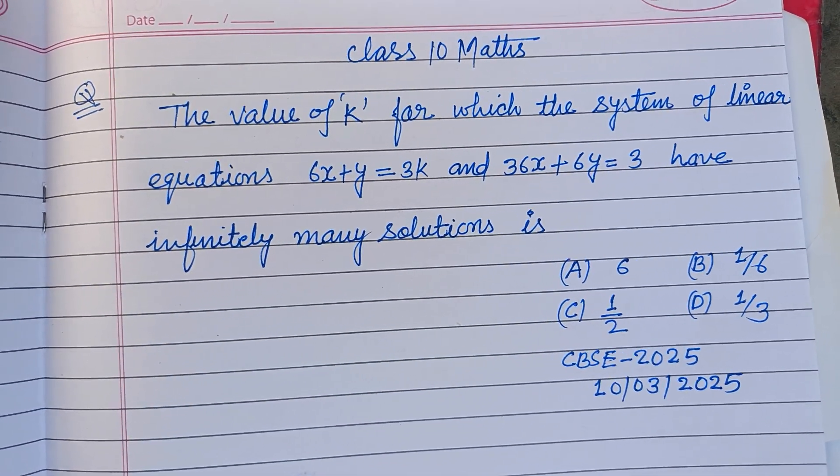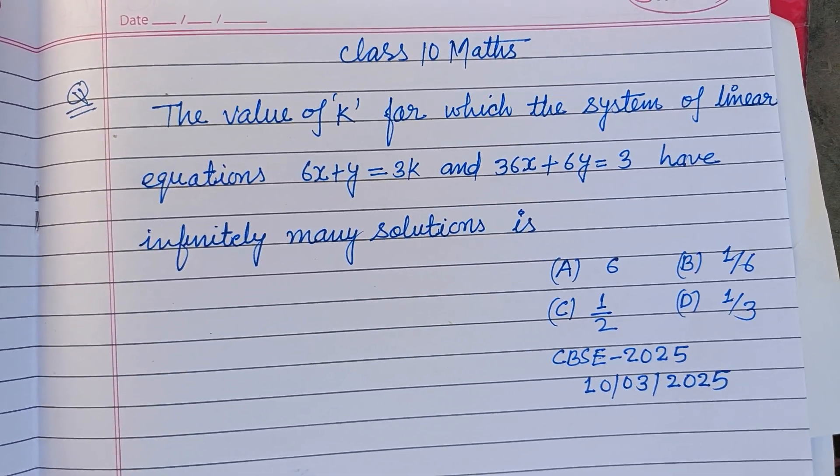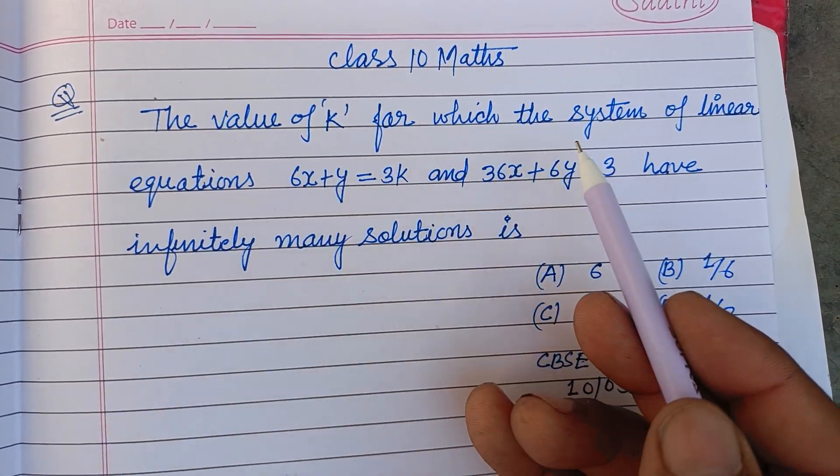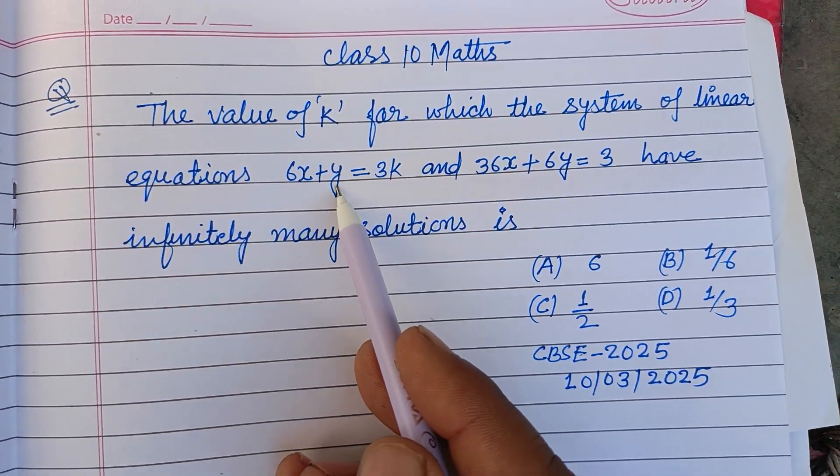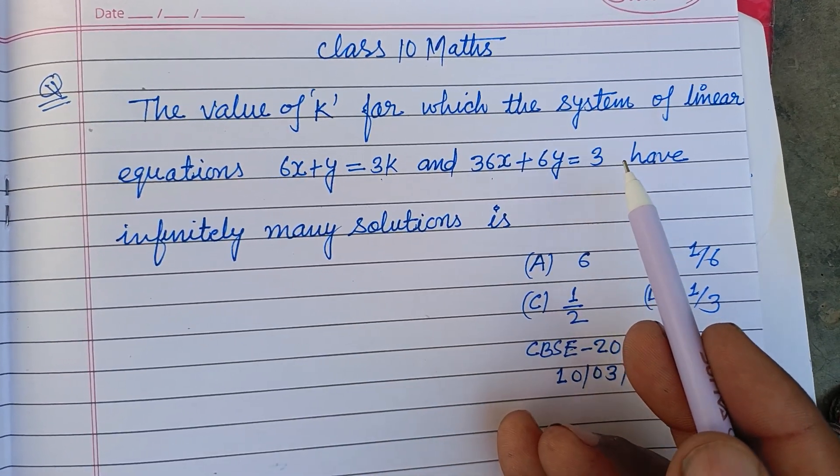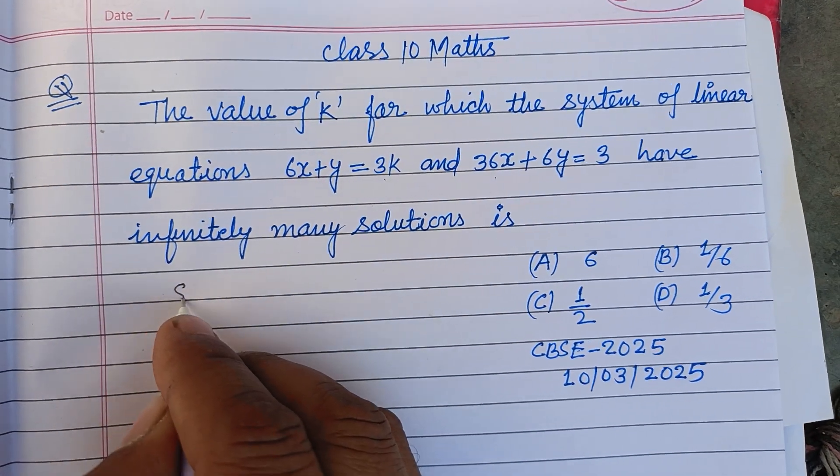Hello viewers, warm welcome to this YouTube channel. This is a question from CBSE board exam 2025, Class 10. The value of k for which the system of linear equations 6x + y = 3k and 36x + 6y = 3 have infinitely many solutions.